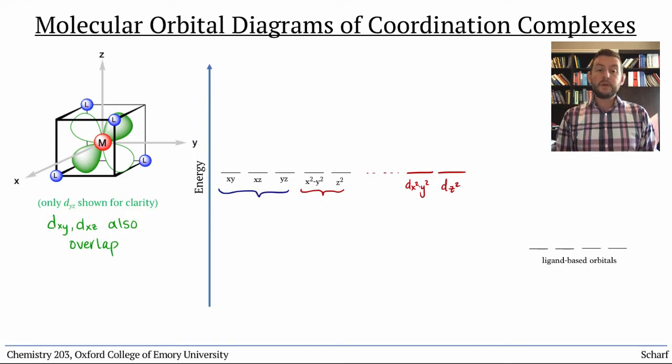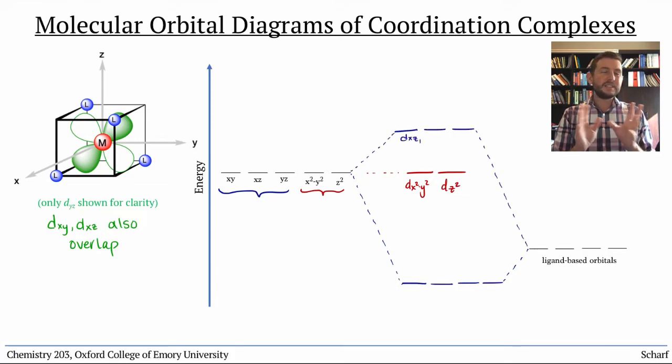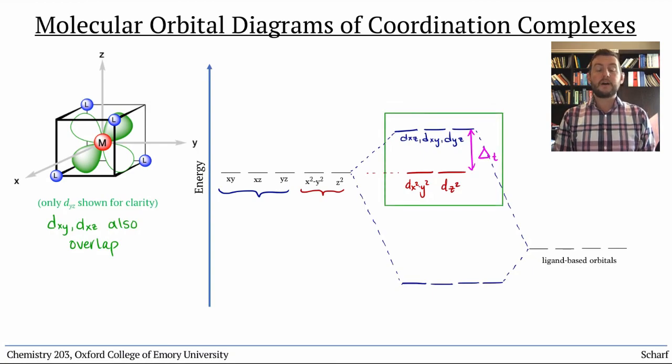Because of the weird 109.5 degree bond angles, the overlap between those three d orbitals and the ligand orbitals isn't perfect. They don't overlap directly. As a result, the amount of splitting, which we call delta tetrahedral or Δₜ, is smaller than for octahedral complexes. Four-ninths... to be precise, two-ninths the size.